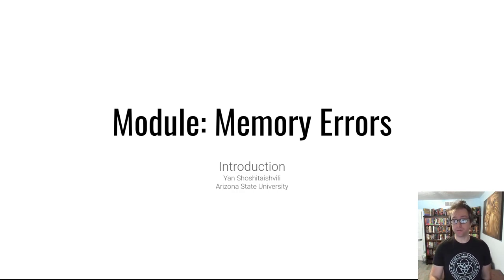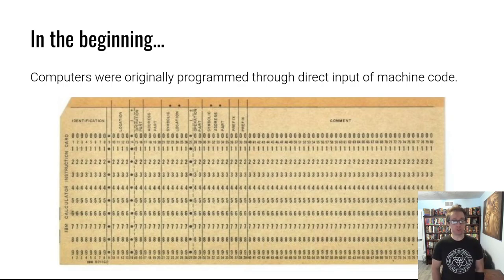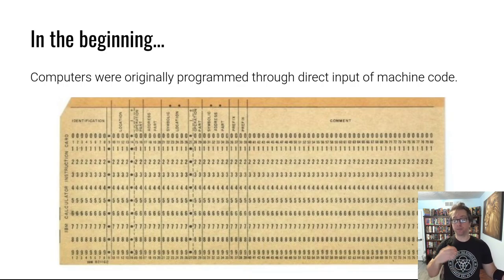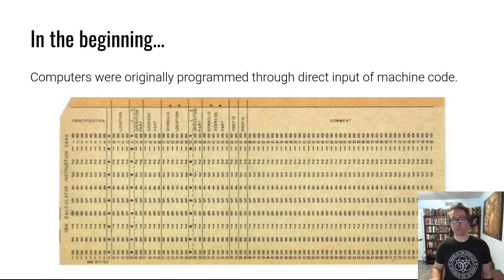We're going to cover memory corruption and other types of memory errors, and then throughout the course we'll dig deeper into advanced scenarios. Let's take a step back to the beginning - a long time ago, computers were programmed through the direct input of machine code, whether that was directly on a punch card, by setting bits in memory, or by writing assembly code like you did in shell coding to make the program do exactly what you wanted.